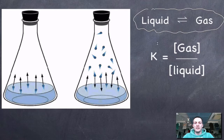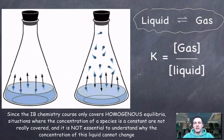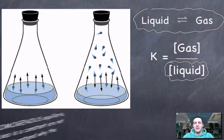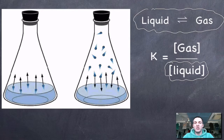This equilibrium behaves like most equilibria in that it has an equilibrium constant K. If this is a pure liquid, its concentration — how many moles per liter — will never change. So the concentration of the liquid is a constant, and K, which only changes with temperature, is essentially proportional to the concentration of the gas.